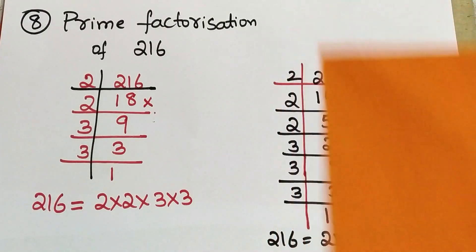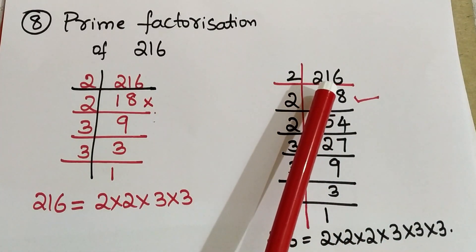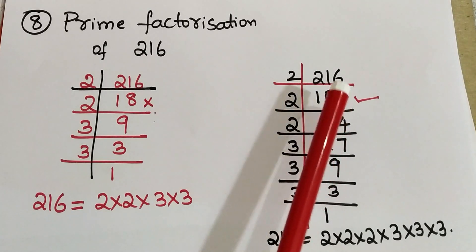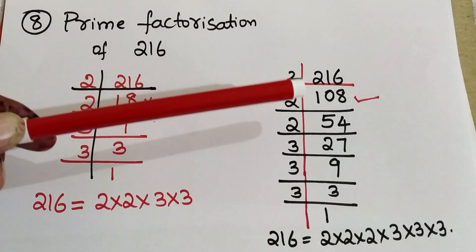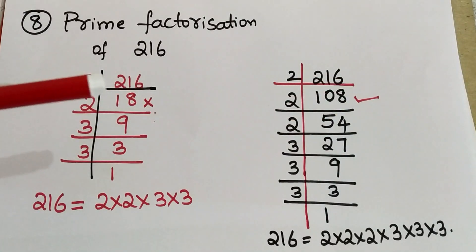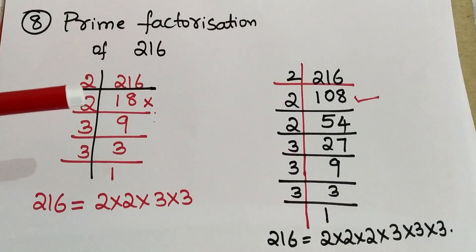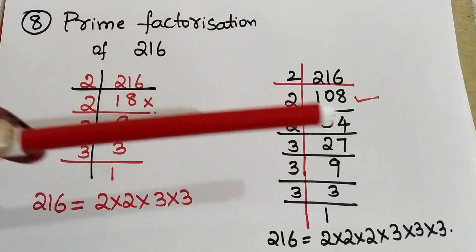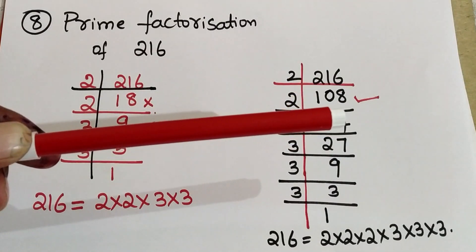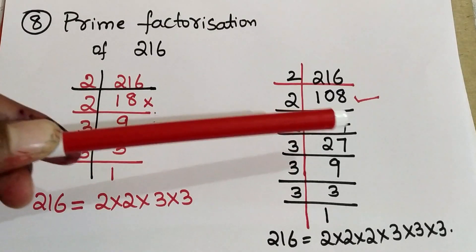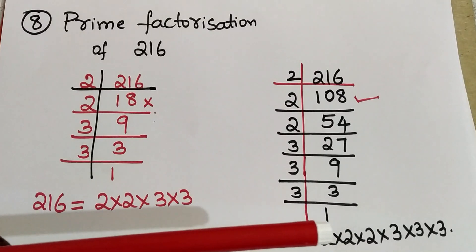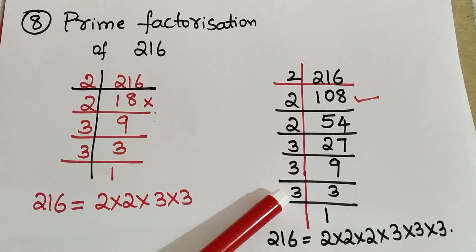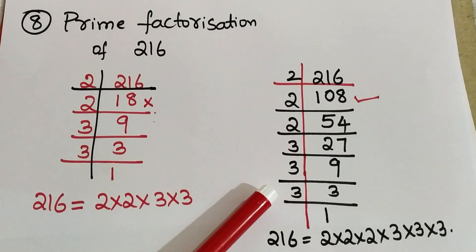The correct procedure: the mistake was in the division step. When dividing, if the digit is smaller than the divisor, we take 0 and bring down the next digit. Correctly dividing 216 by 2, then continuing: 216 ÷ 2 = 108, 108 ÷ 2 = 54, 54 ÷ 2 = 27, 27 ÷ 3 = 9, 9 ÷ 3 = 3, 3 ÷ 3 = 1. So 216 can be expressed as 2 into 2 into 2 into 3 into 3 into 3. This is the correct procedure.